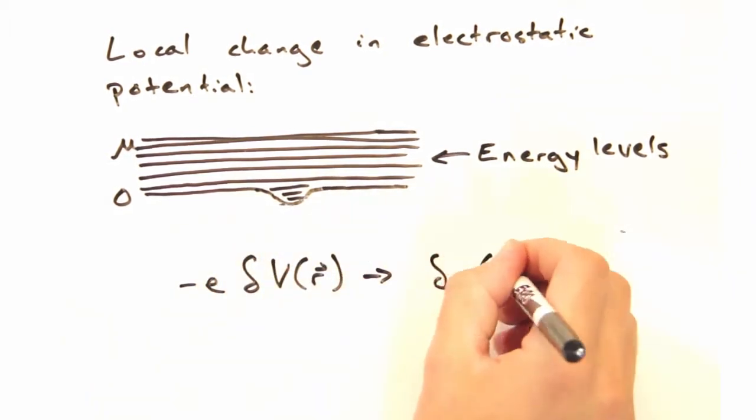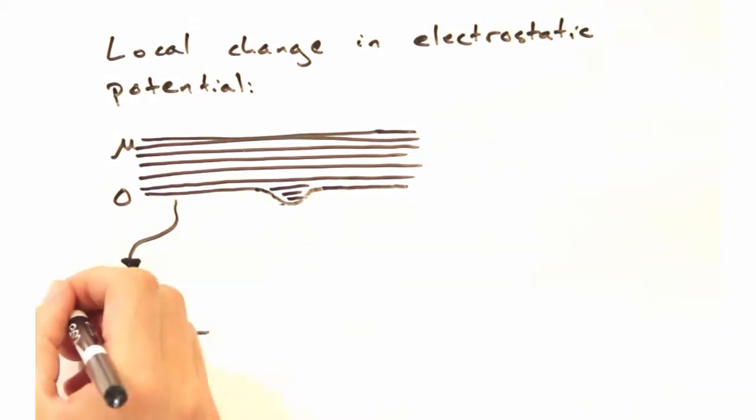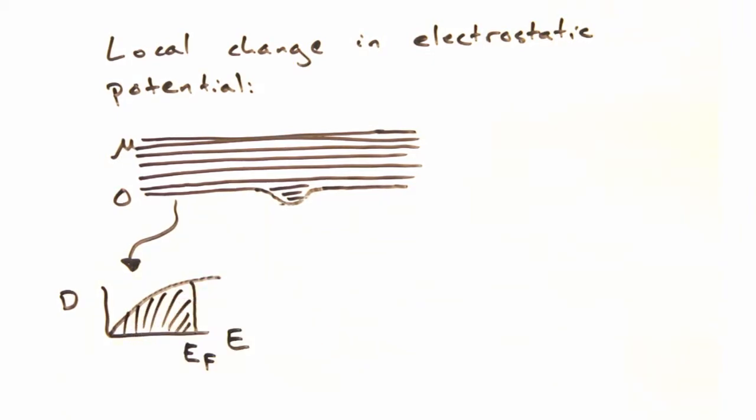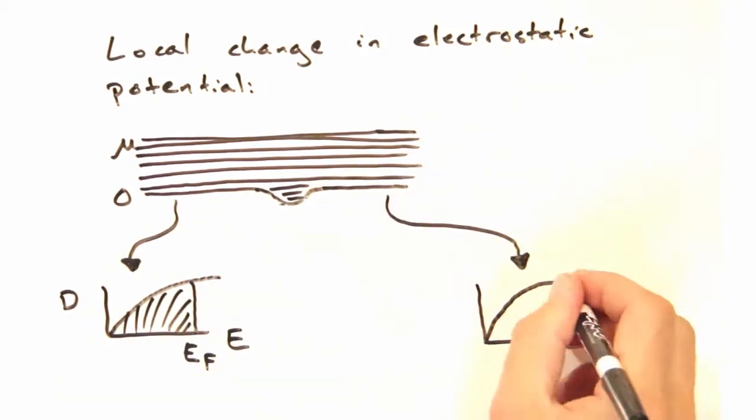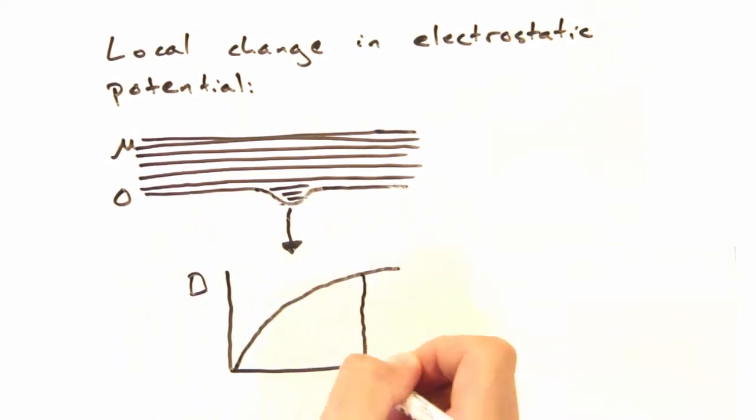The local change in potential needs to be self-consistent with this change in electron density. Away from the perturbation, the density of states is what you might expect with filled states to the Fermi level. How do you think this will change once we add the extra charge?